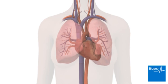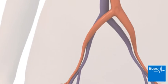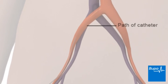Angioplasty is normally carried out under local anaesthetic to numb the area where the catheter is inserted. You will stay awake during the procedure. A small cut will be made in your groin and a catheter will be passed up through an artery to your heart. Your surgeon will use x-ray images to guide the catheter and direct it to the narrowed artery. Here we show the path of the catheter to your heart.